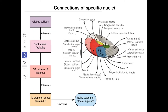Next we'll see the connections of the ventral anterior nucleus of the thalamus. From the globus pallidus you get the subthalamic fasciculus, which forms the afferent to the ventral anterior nucleus of the thalamus. From here the efferent goes to the premotor cortex, area number 6 and 8. The function is it is the relay station for the striatal impulses.